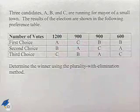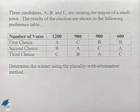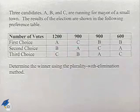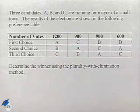Now let's look at another voting method. Three candidates, A, B, and C, are running for mayor of a small town. The results of the election are shown in the following preference table.